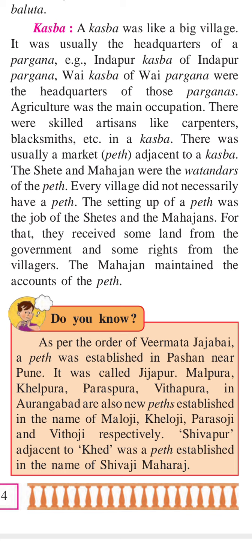We were discussing the settlements of Maharashtra before Shivaji. The next point is Kasbah. A Kasbah was a big village, usually the headquarters of a Paragana. For example, Indapur Kasbah was the headquarters of Indapur Paragana, and Y Kasbah was the headquarters of Y Paragana.